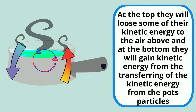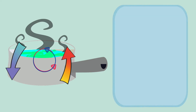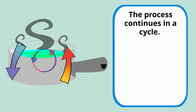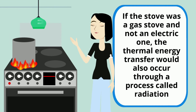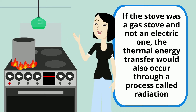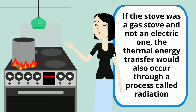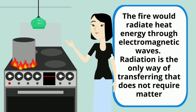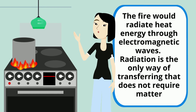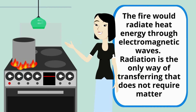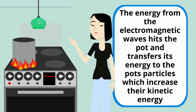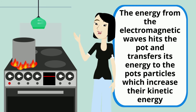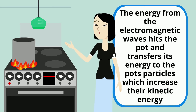At the top, they will lose some of their kinetic energy to the air above, and at the bottom, they will gain kinetic energy from the transferring of the kinetic energy from the pot's particles. The process continues in a cycle. If the stove was a gas stove and not an electric one, the thermal energy transfer would also occur through a process called radiation. The fire would radiate heat energy through electromagnetic waves. Radiation is the only way of transferring that does not require matter. The energy from the electromagnetic waves hits the pot and transfers its energy to the pot's particles, which increase their kinetic energy.